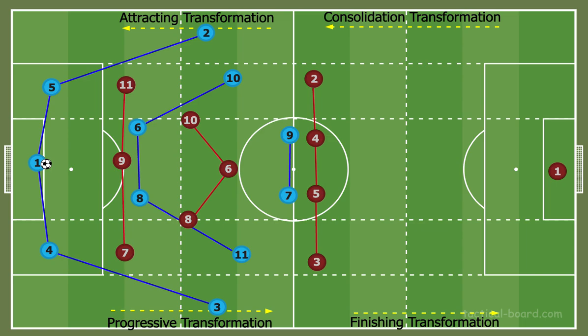As we know, the regular model of the phases of play — offense, defense, offensive transition, defensive transition — is a pretty basic model, but within each phase there's not much room. There are no diagrams or sequences that describe the elements of these phases in detail.